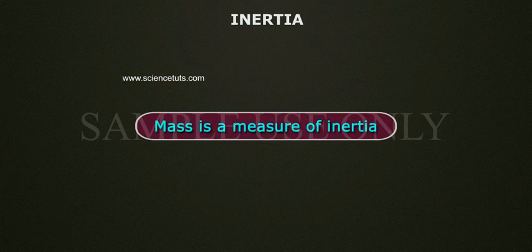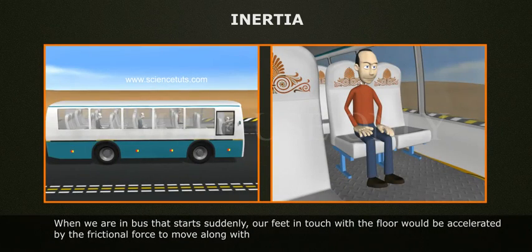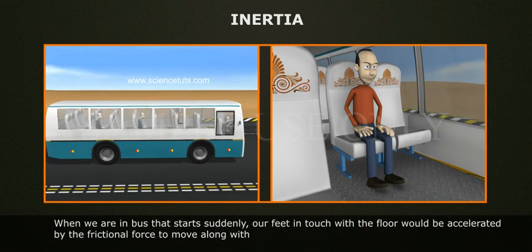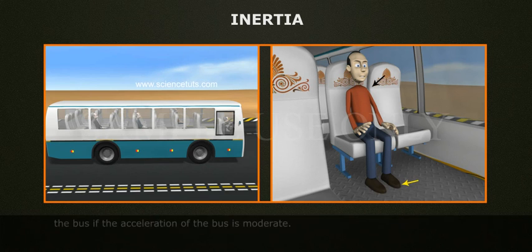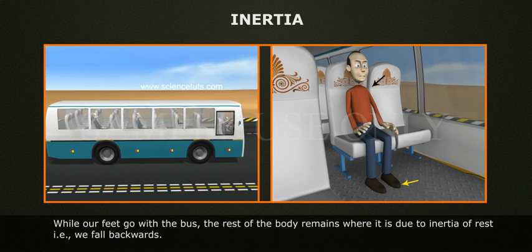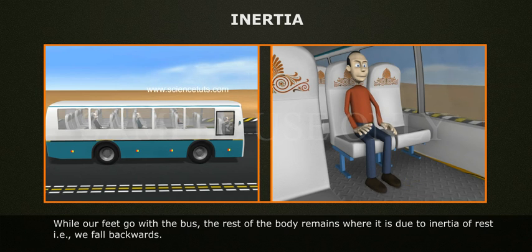Mass is a measure of inertia. For example, when we are in a bus that starts suddenly, our feet in touch with the floor would be accelerated by the frictional force to move along with the bus if the acceleration of the bus is moderate. While our feet go with the bus, the rest of the body remains where it is due to inertia of rest, that is we fall backwards.